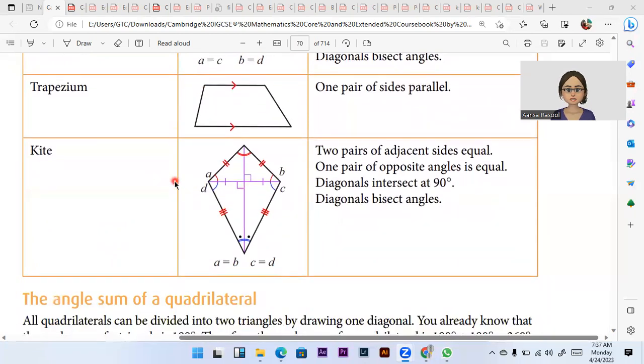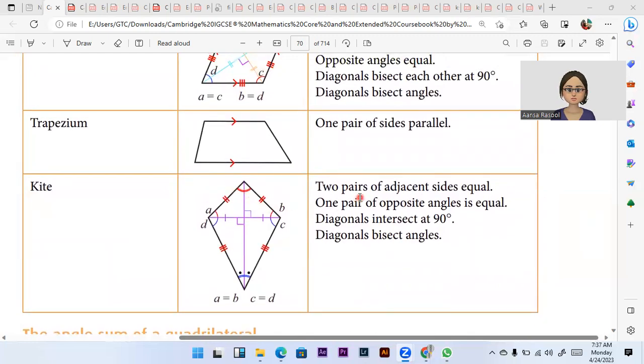And this is kite. In kite, basically, the thing is that two pairs of adjacent sides are equal. It means this side is equal to this side. Adjacent means exactly opposite in front of it. And this side is equal to this side. And one pair of opposite angle is equal.